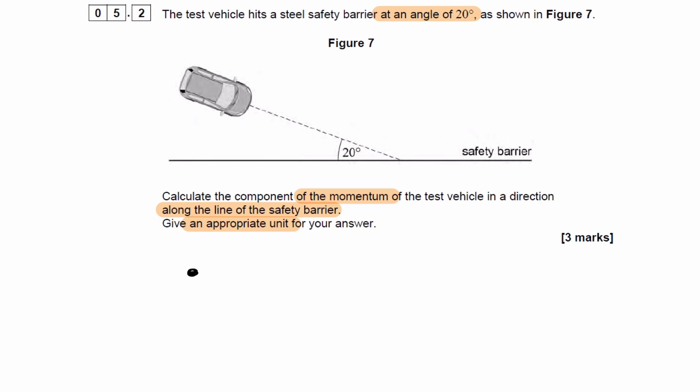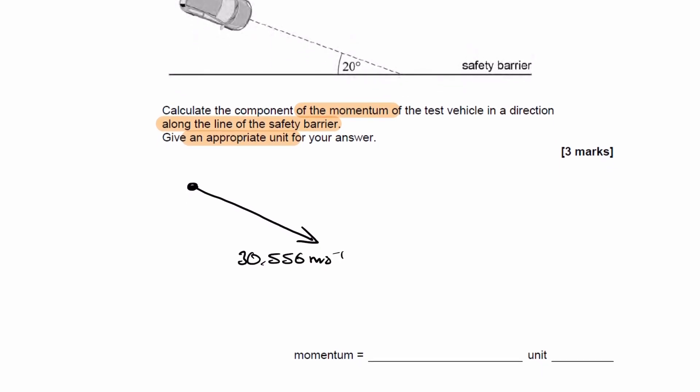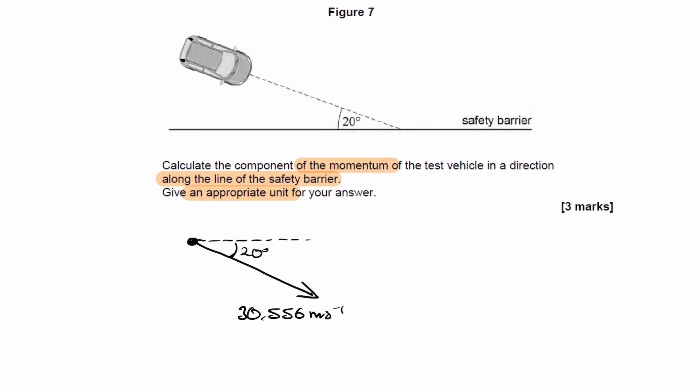Our velocity is 30.556 metres per second at an angle of, as we can see from our diagram, 20 degrees to the horizontal. We want to work out the component of momentum along the line of the safety barrier. So we have to resolve our velocity in this direction. If I draw a line down here, using SOHCAHTOA, this would be 30.556 cos 20, and 30.556 cos 20 is equal to 28.713.